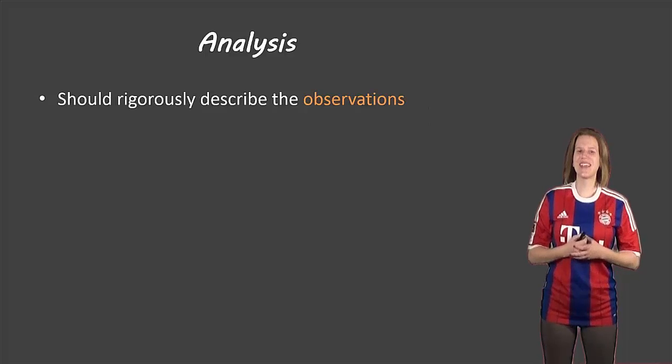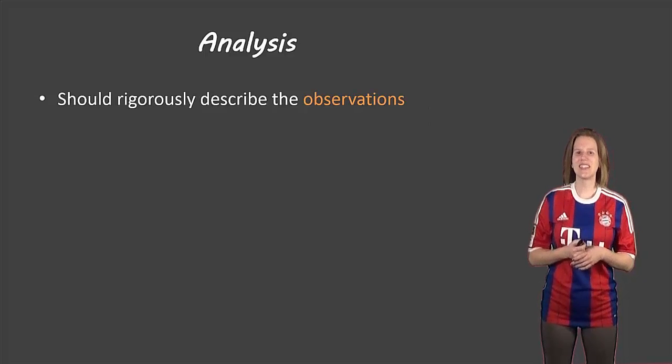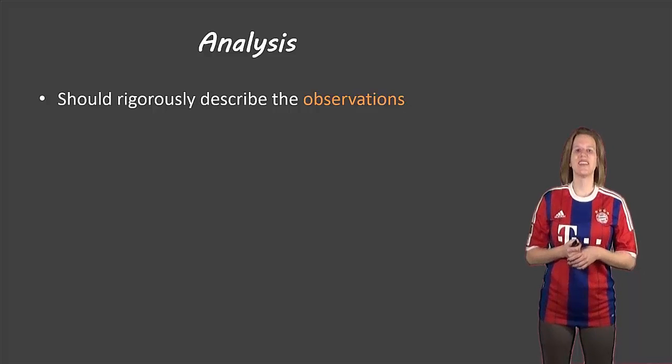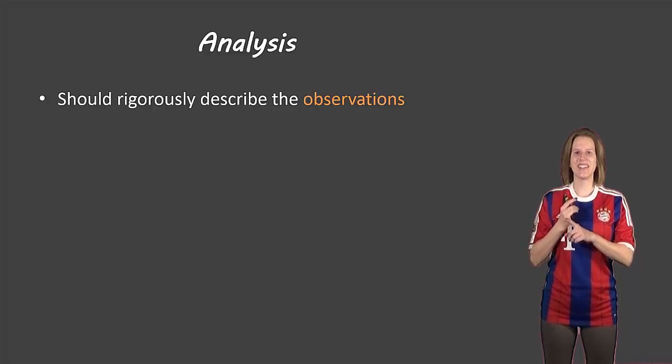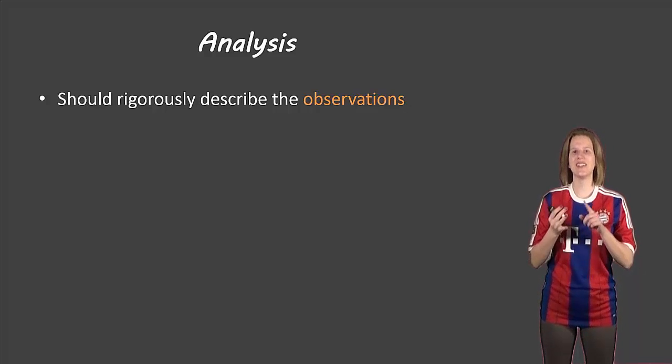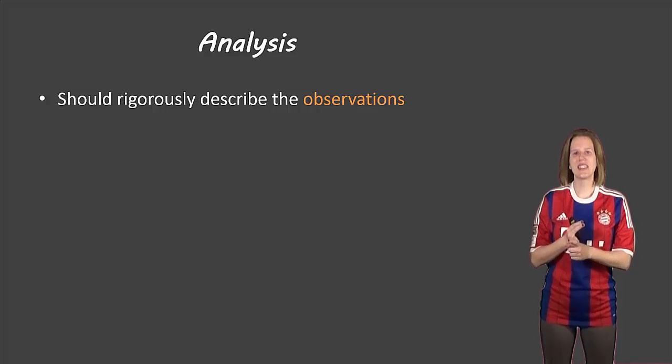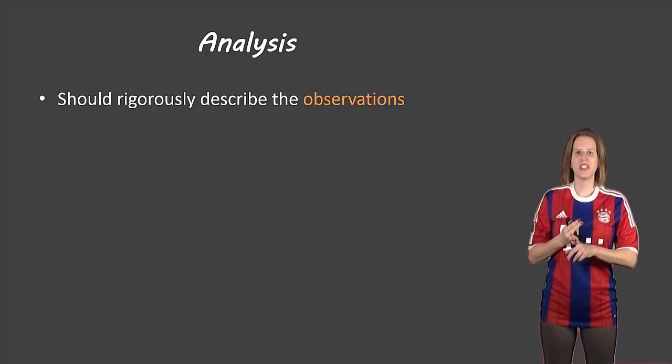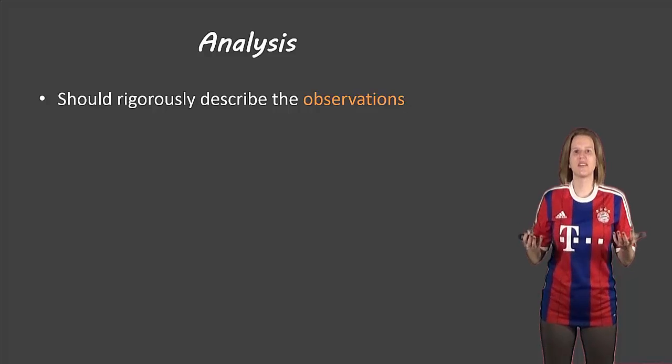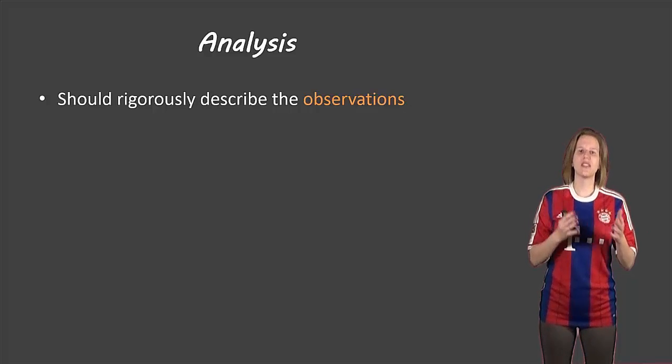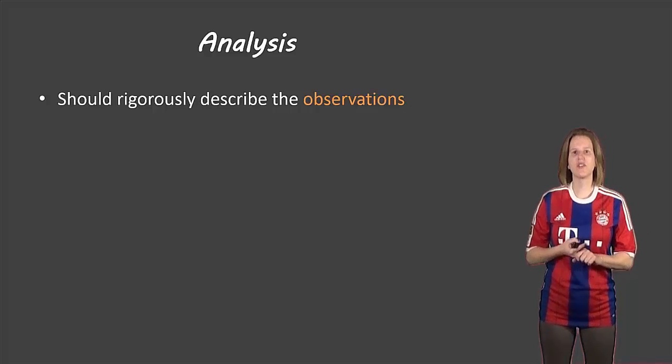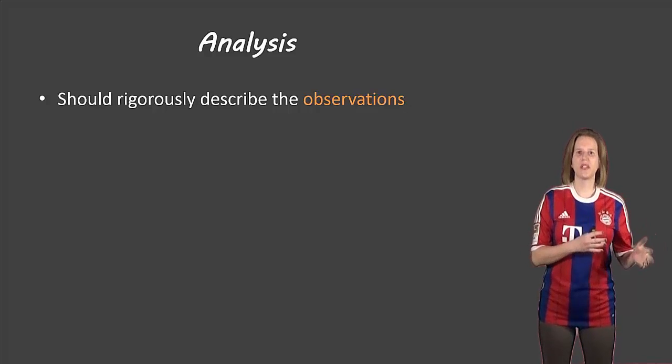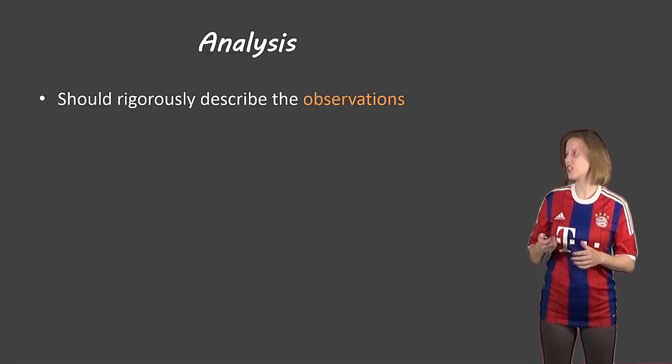So the first thing with our Analysis section, it should rigorously describe the observations. So first thing in that sentence, it has to relate to the observations. Second thing, rigorously describe. So your observation section just lists the things that you notice, whereas here when you say rigorously describes, that means you need an explanation for everything that you notice in your observations.